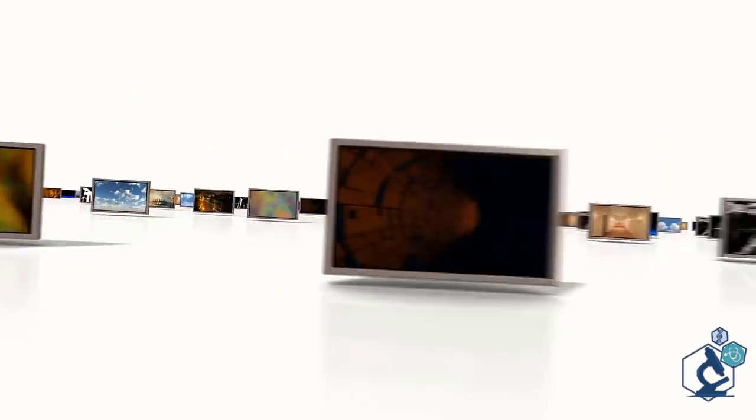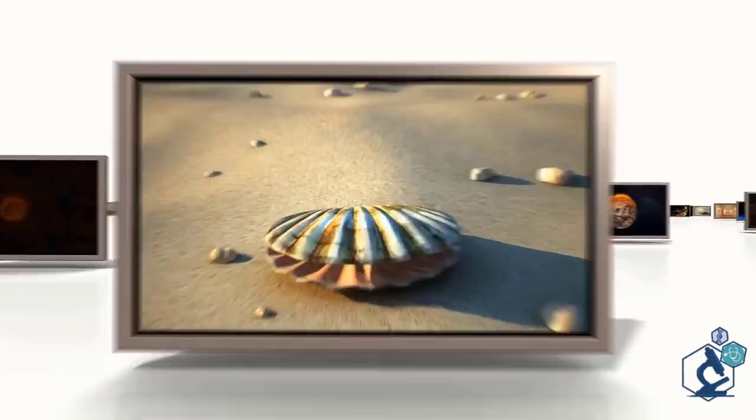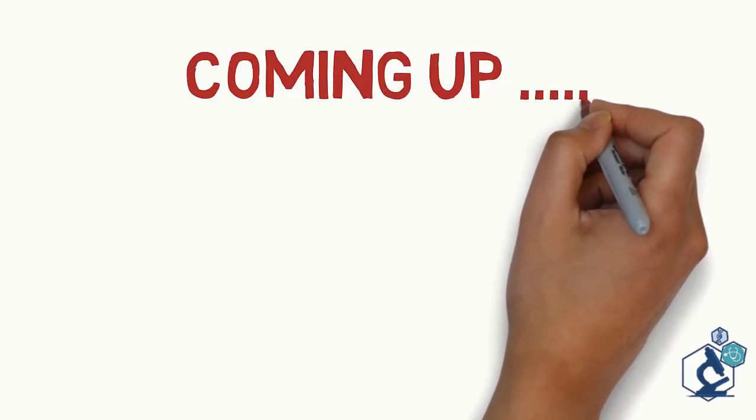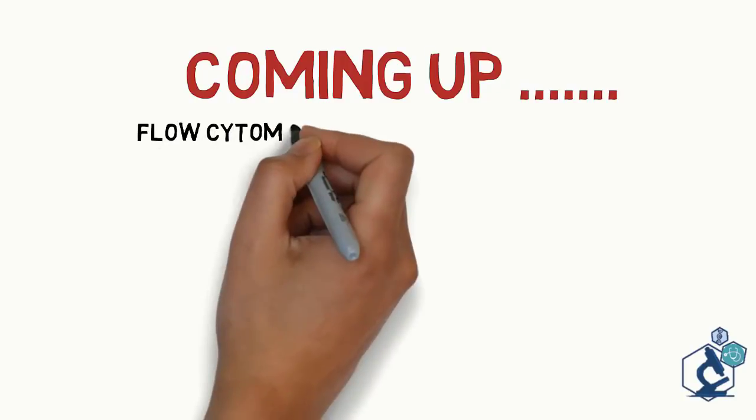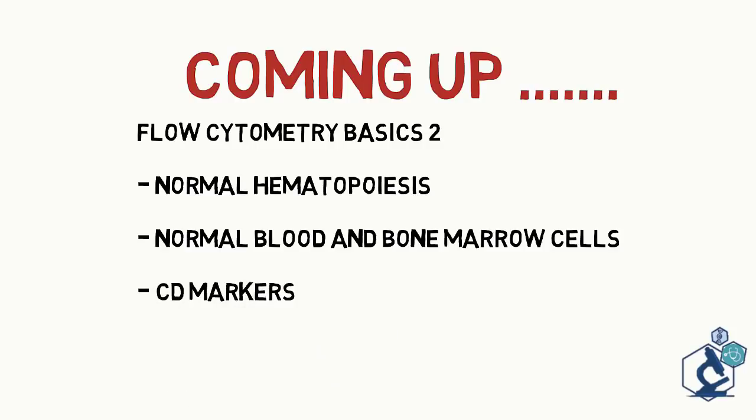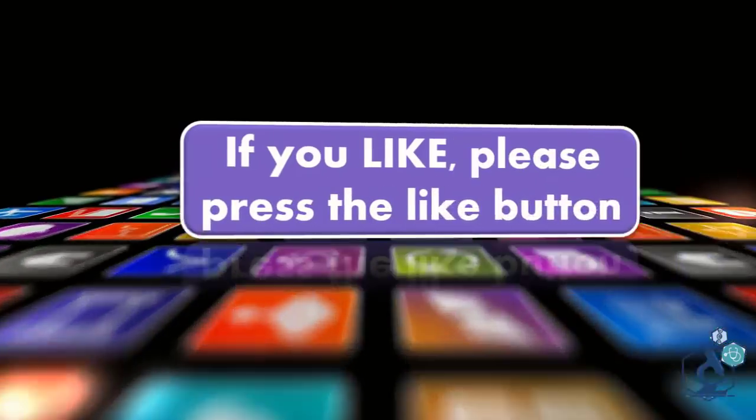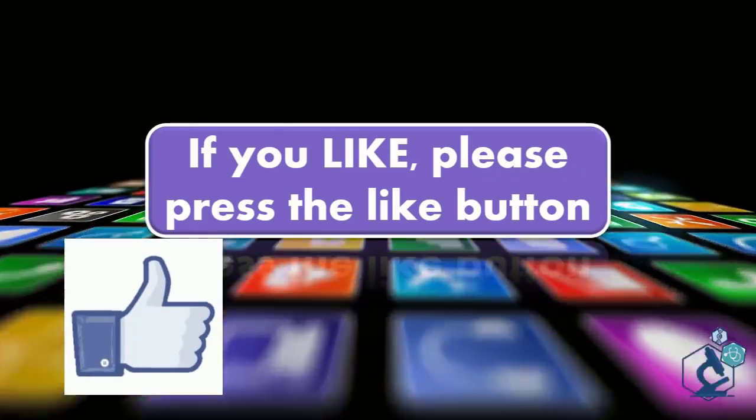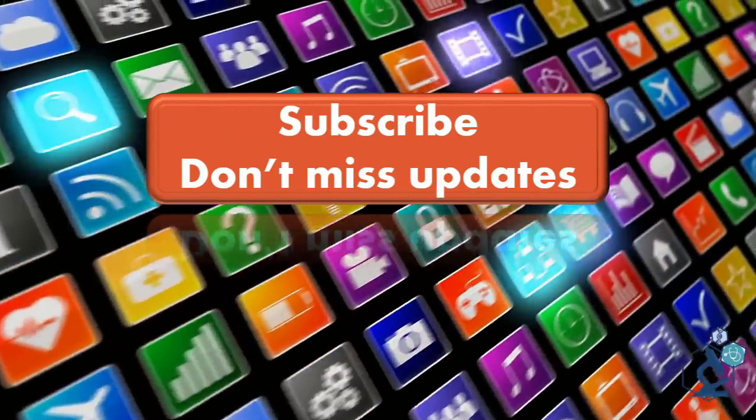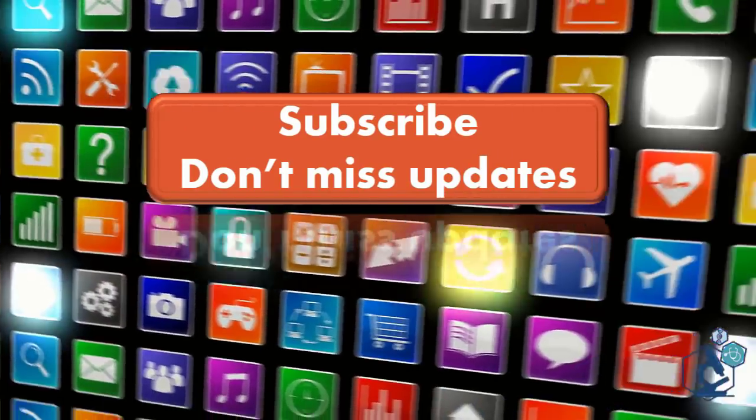So guys, that's all for today. Hope you were able to understand the basics of flow cytometry. In next video, we will be discussing flow cytometry on normal hematopoiesis, including normal myeloid T and B cell differentiation. This is essential before we proceed towards flow cytometry analysis of leukemias and lymphomas in our coming videos. Thank you for listening and if you like our videos, please press the like button and don't forget to subscribe so that you don't miss updates about our next videos.